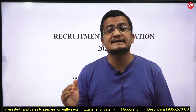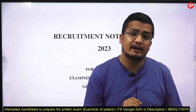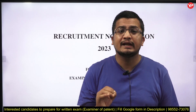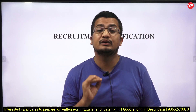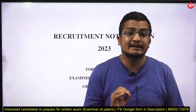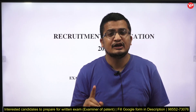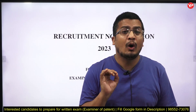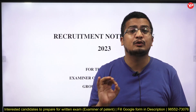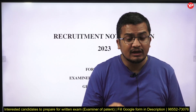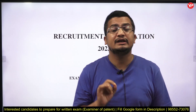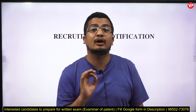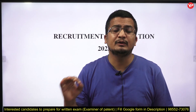There are 10 to 13 subjects in each engineering domain. If you practice even 100 questions per subject, that totals around 1,200 to 1,300 questions. The very first mistake students commit is practicing random questions. Don't practice those 1,200 random questions — instead, focus your practice strategically.